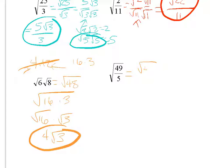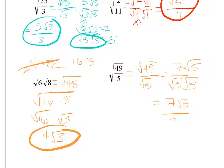Last one: the square root of 49/5. Split it into square root of 49 over square root of 5, which is 7 over square root of 5. Rationalize by multiplying top and bottom by square root of 5. Top: 7 square roots of 5. Bottom: square root of 5 times square root of 5 is just 5. Final answer: 7 square roots of 5 over 5. Important: the square root of 5 on top does not cancel with the 5 on the bottom—square root of 5 is approximately 2.23, not 5.